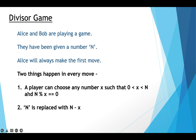Number one: a player can choose any number X, provided that X is greater than 0 and less than N, and when N is divided by X, the remainder should come out as 0. Number two: when a player has chosen X, then N is replaced with N minus X.